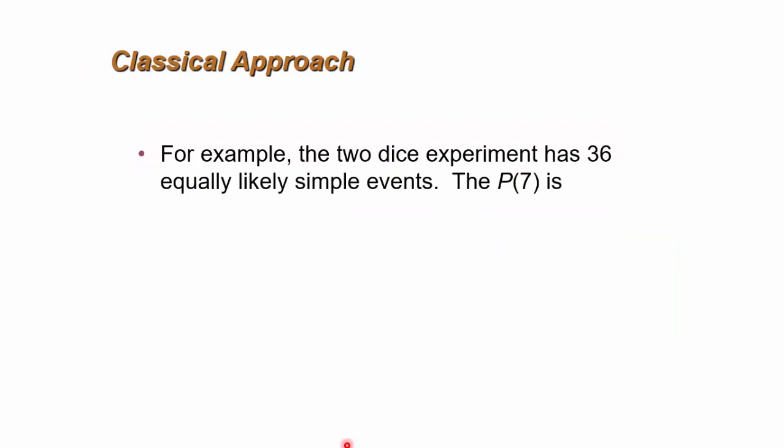So another example: if you're rolling two dice, you know there are two dice, each with six faces. So six times six is 36 possible events, and all equally likely. What's the probability of getting a seven?